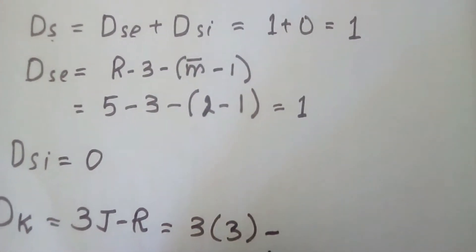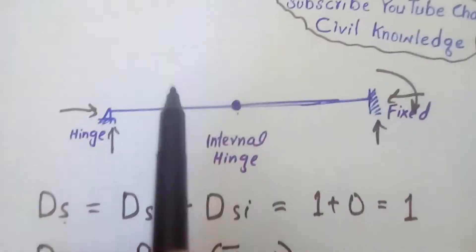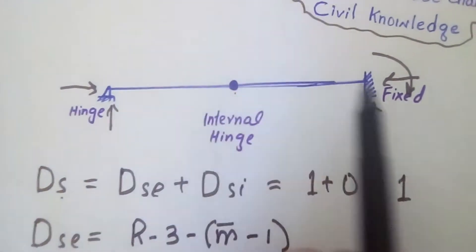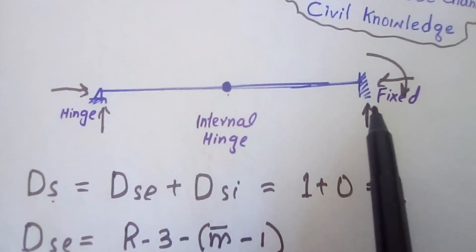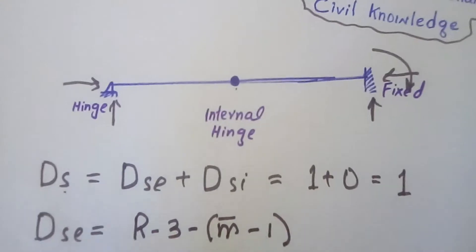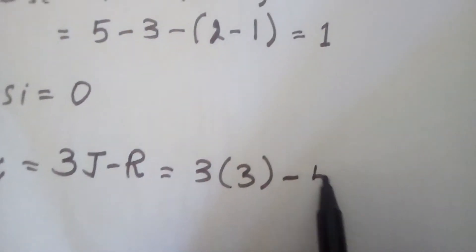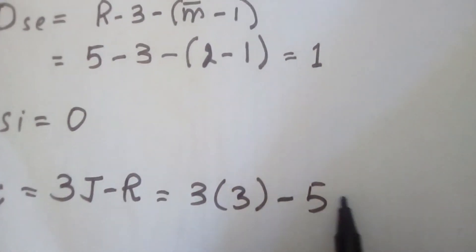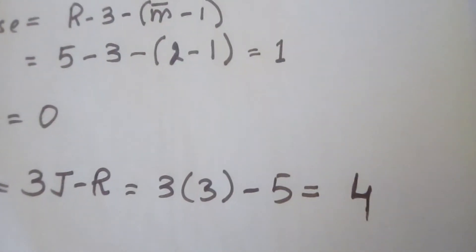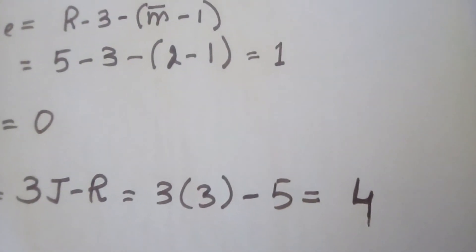The hinge support has two reactions and the fixed support has three reactions, so the total number of reactions is five. Therefore, the kinematic indeterminacy equals 3(3) − 5 = 9 − 5 = 4.